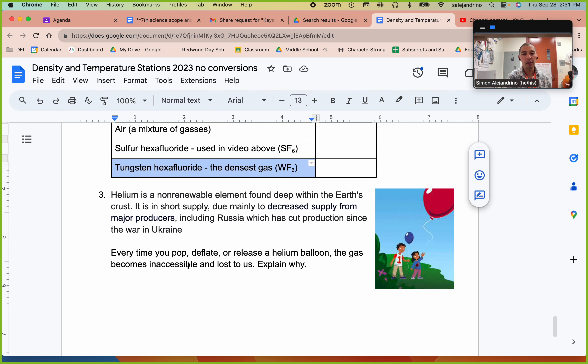So helium is a non-renewable element found deep in the earth's crust and we extract it and we do all kinds of stupid stuff like that, like put it in kids' balloons. We also use it for other things like electronics manufacturing. So here's the problem.